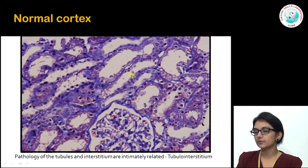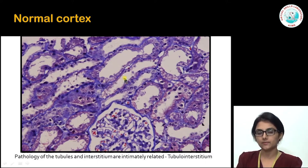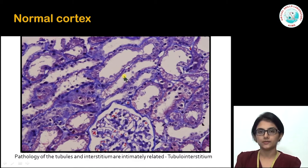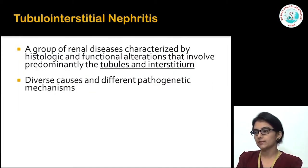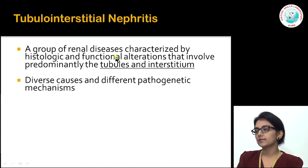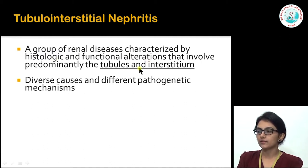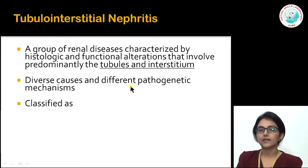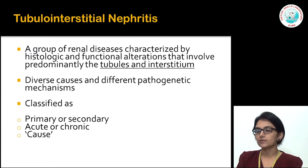This is a Masson's trichrome stain section still showing the normal kidney. The tubules and interstitium are so intimately associated that whenever there is any pathology they tend to affect both together, and we put them under tubular interstitial diseases. Tubular interstitial nephritis is a group of renal diseases characterized by both histologic and functional alterations involving the tubules and interstitium. We can classify them as primary or secondary, acute or chronic, or based on cause.